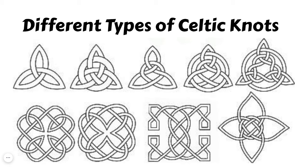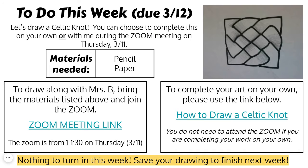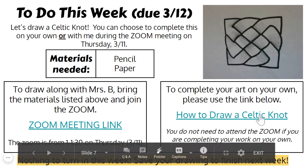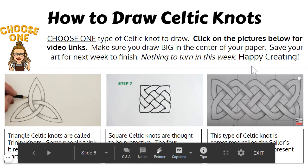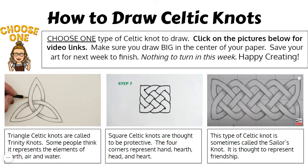There are a bunch of different types of Celtic knots like we talked about — here are some pictures of them. Here is your assignment for this week. We do have the option to complete this assignment with me on Zoom. On the left there is a link to our Zoom meeting where we're going to be drawing Celtic knots. You're going to need a pencil and a sheet of paper. The Zoom is on Thursday this week from 1 to 1:30. If you do not want to attend the Zoom, you can complete the art on your own. If you click on this link, there are three different video links for different Celtic knots. The difficulty level starts with more simple and then gets more challenging as it goes to the right.